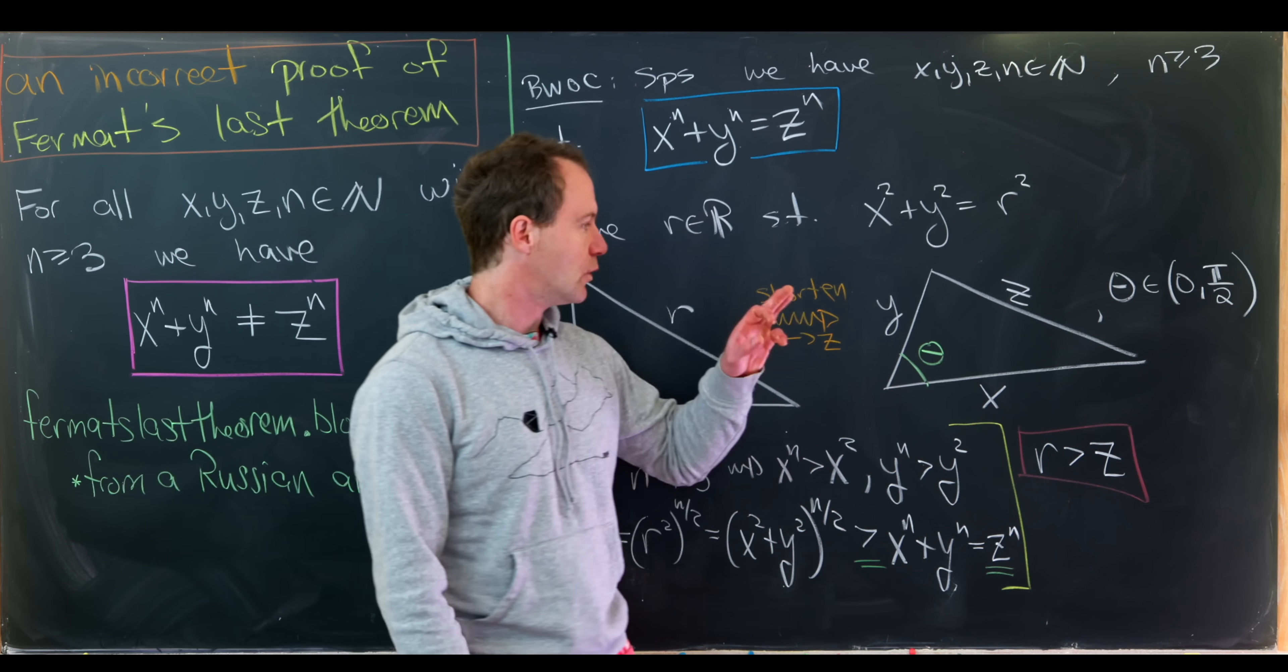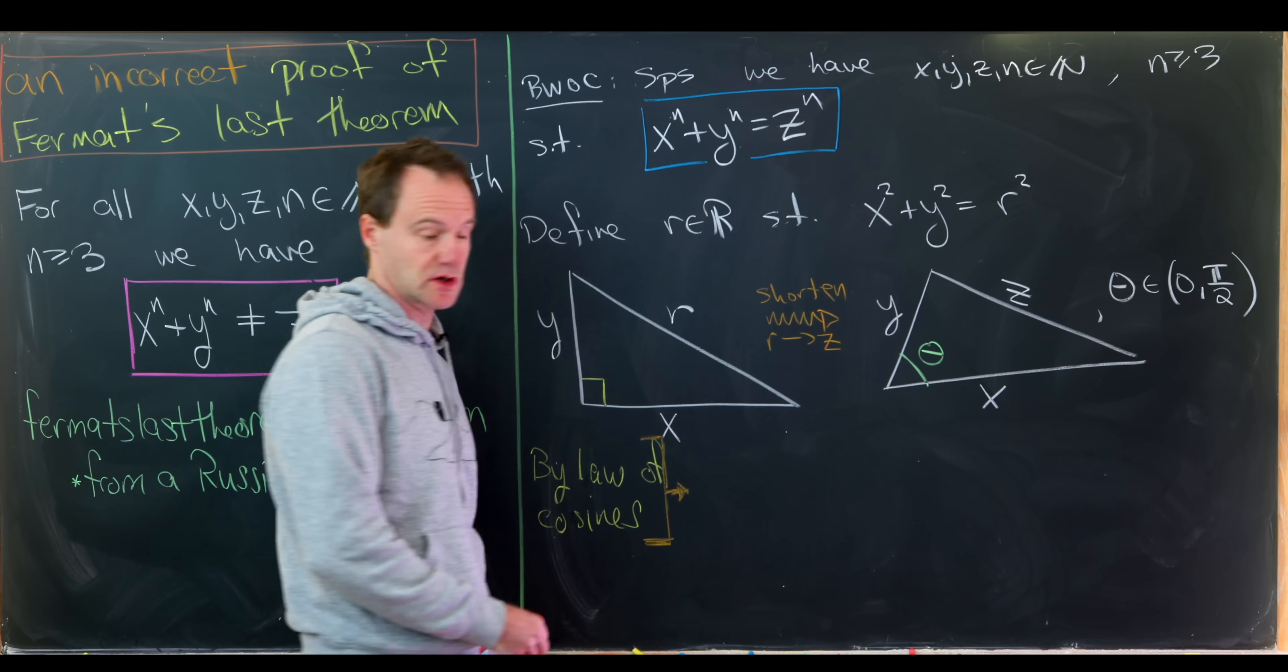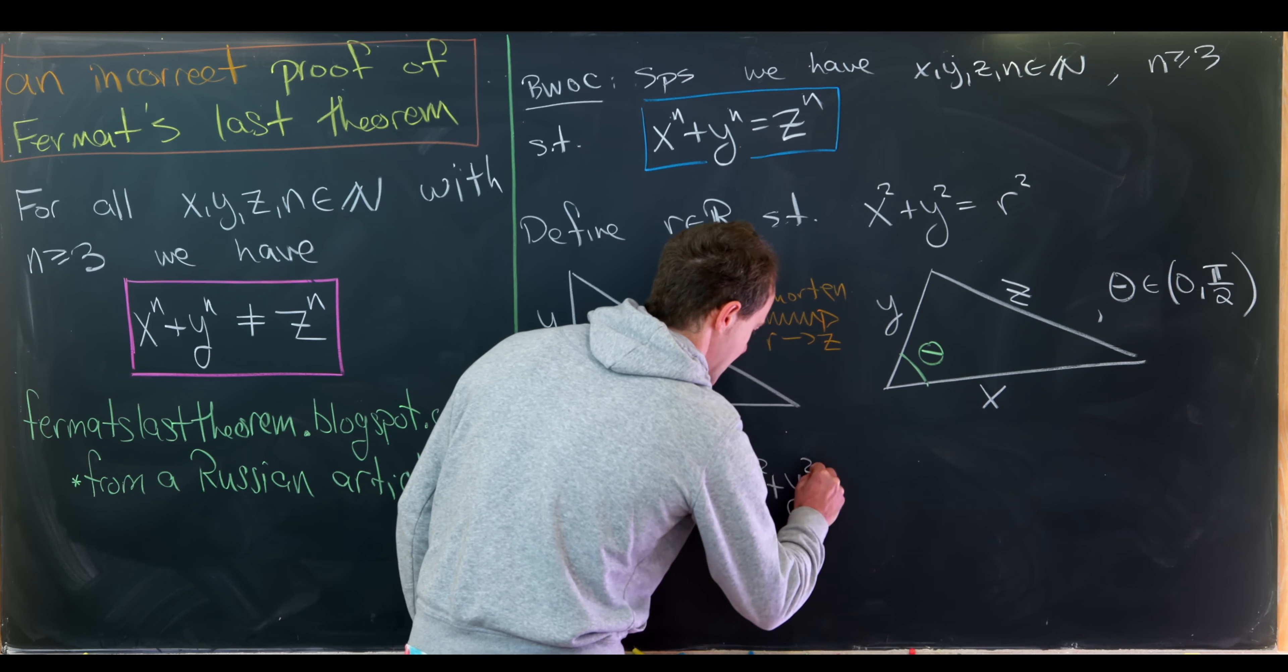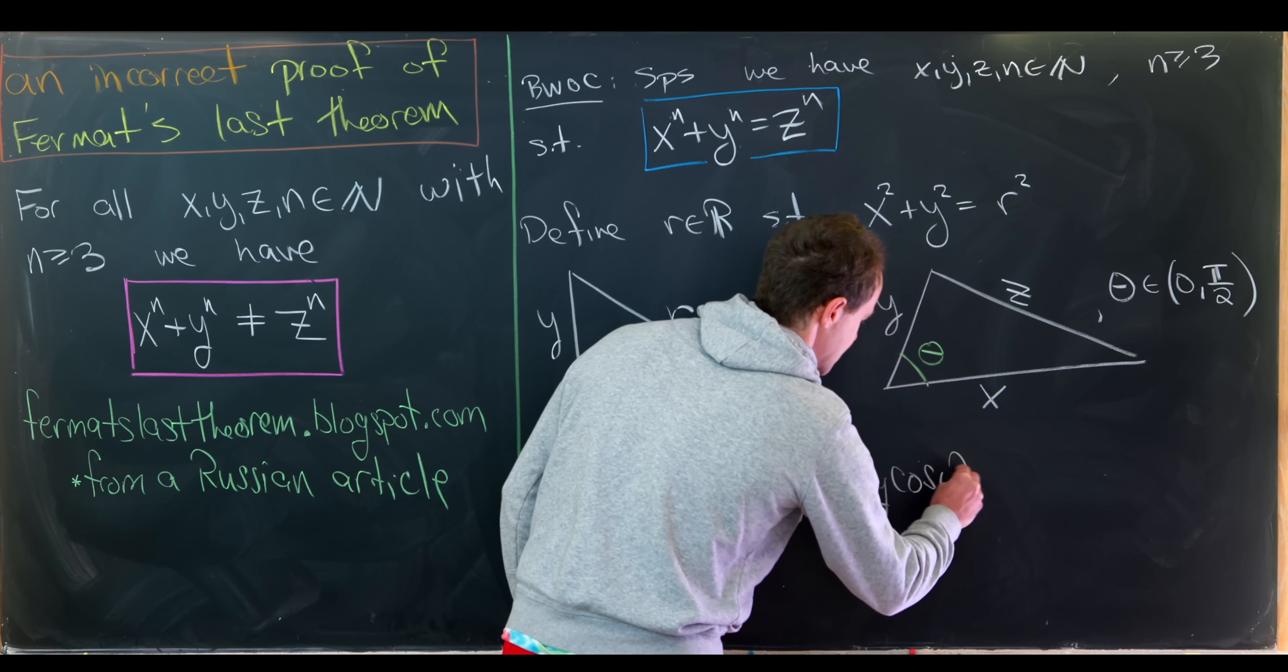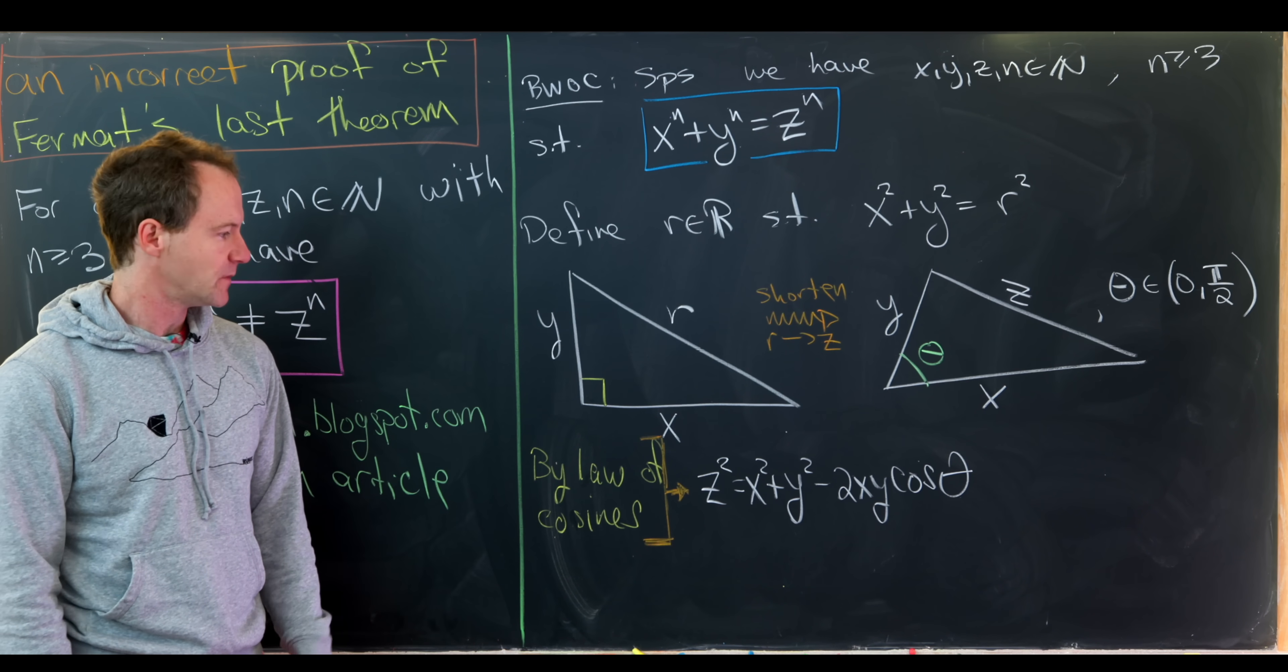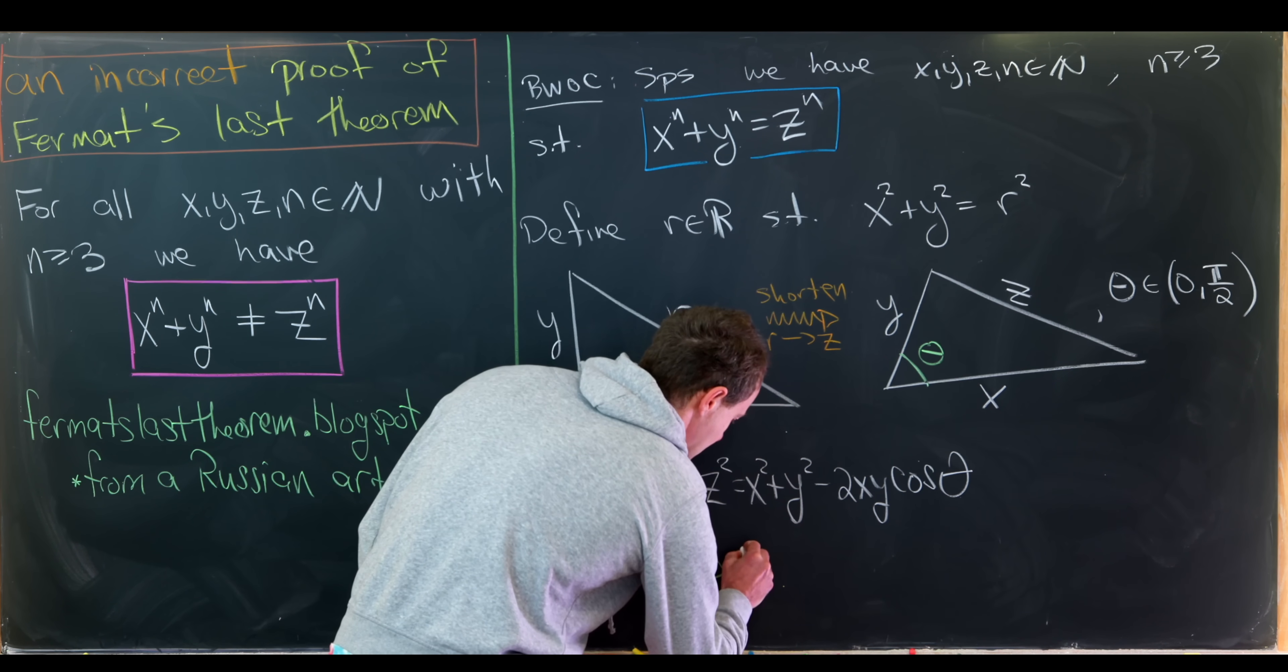So from here we'll apply the law of cosines to the second shortened triangle. So applying the law of cosines to this shortened triangle gives us something like this. We have z squared equals x squared plus y squared minus 2 times x times y times cosine theta. So I won't derive the law of cosines. I think we'll just take that as a fact right now. But now let's solve this for cosine theta.